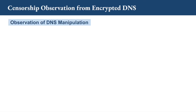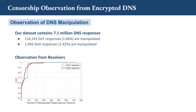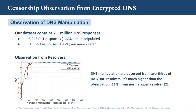Now let's see our observations on DNS manipulation. In total, our dataset contains 7 million DNS responses. Among them, over 100,000 DoT responses are manipulated and roughly 2,000 DoH responses are manipulated. From the CDF of manipulated responses per resolver, we can see that DNS manipulations are observed from two-thirds of the resolvers — a rate much higher than the roughly 11% observed from normal open resolvers. So DNS manipulation is even more prevalent when using encrypted DNS.